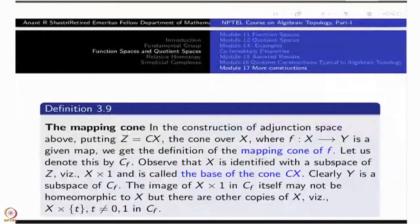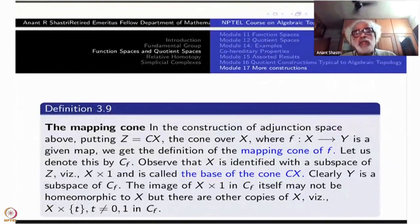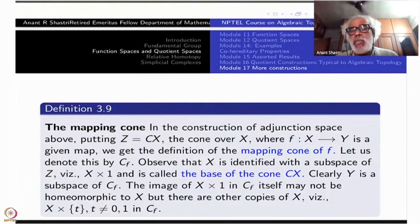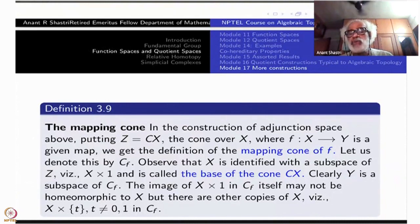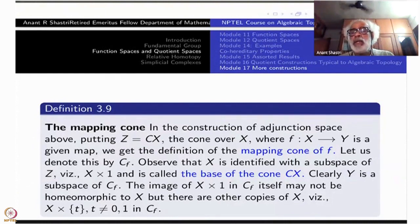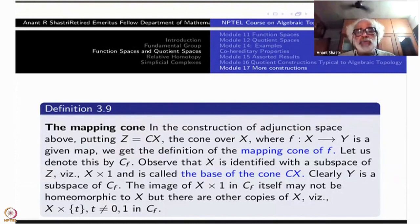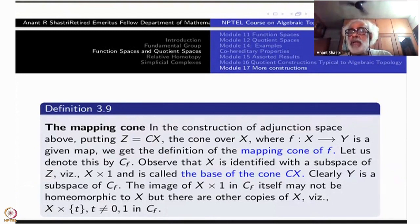Here is another construction, which is a slight modification of the mapping cylinder. Recall that the mapping cylinder of a function F from X to Y was defined as the quotient space of X cross [0,1] disjoint union Y, by the relation that (x,1) is identified with F(x). You can think of this as an adjunction space of X cross I disjoint union Y, via the map defined on X cross {1} to Y.